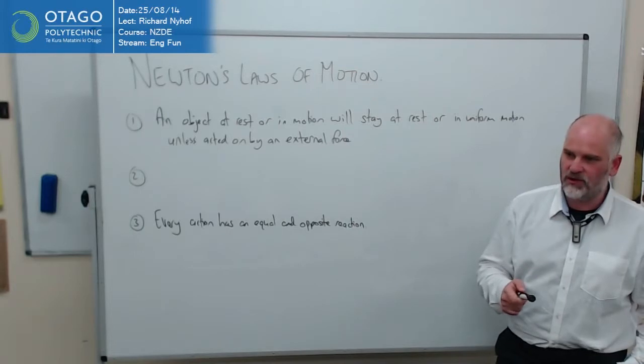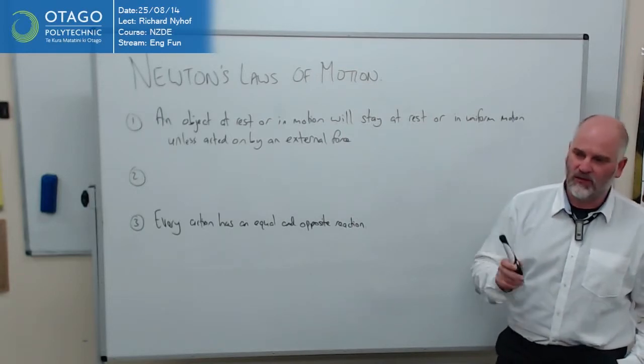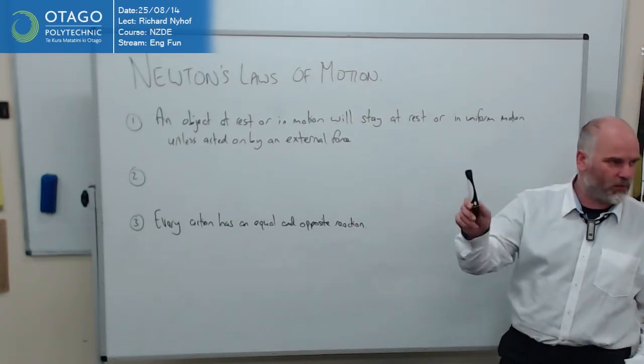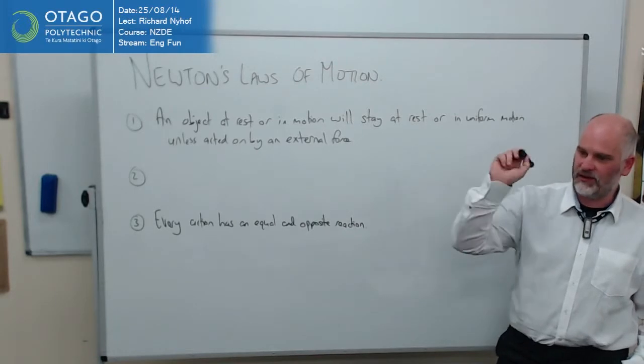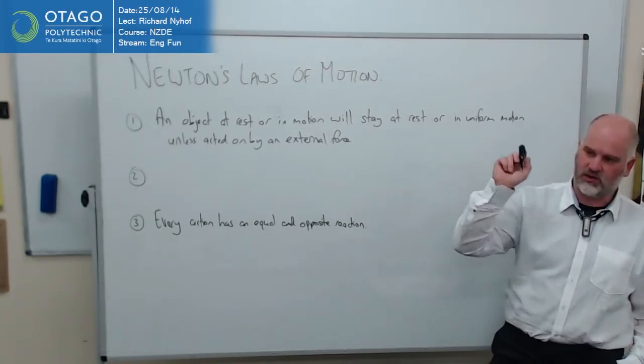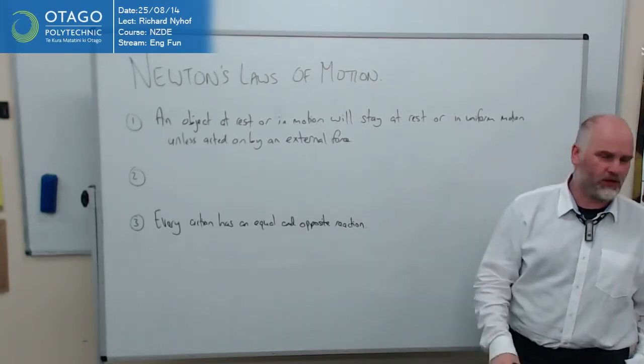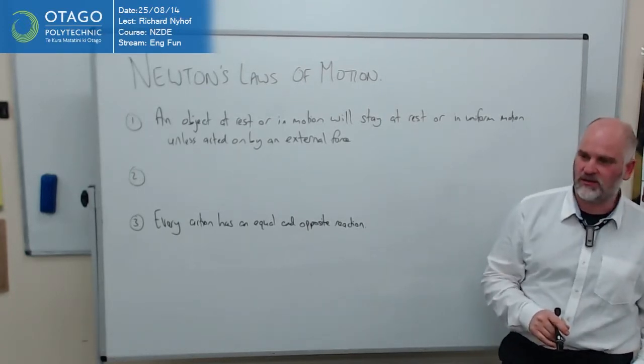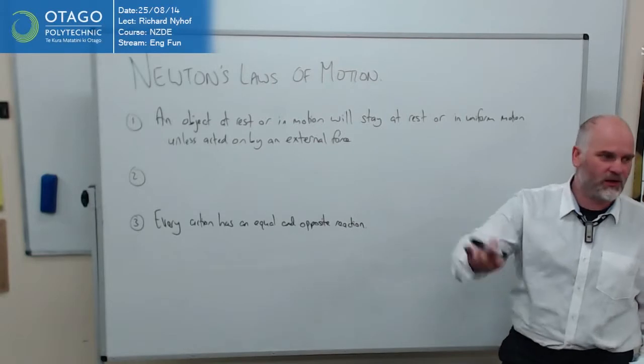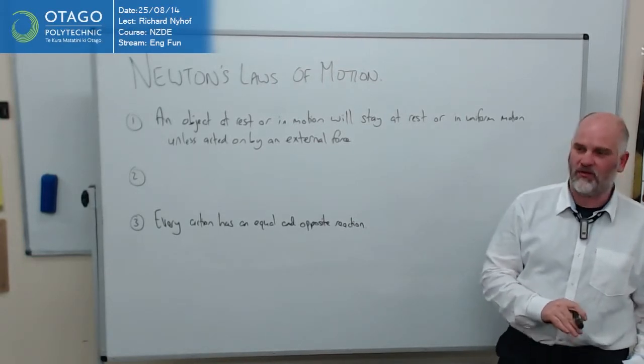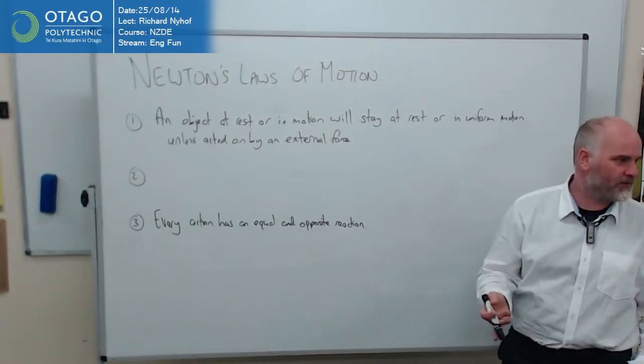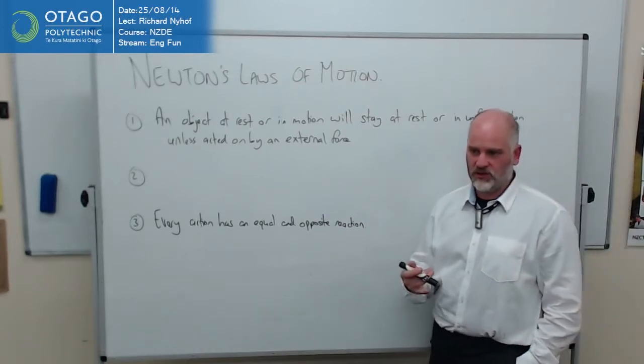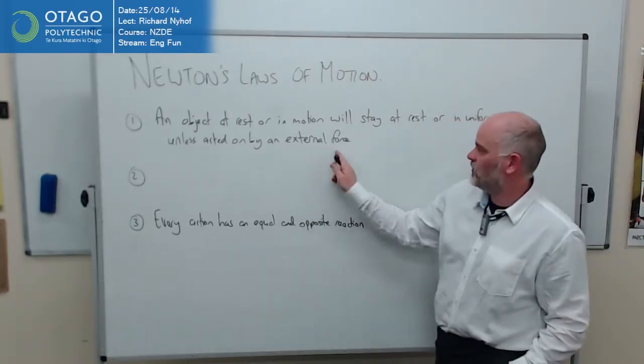But the idea that things that are going in uniform motion keep going in uniform motion isn't what we experience in day to day. So if I throw this whiteboard marker in a straight line, it doesn't keep on going in a straight line. It does a curve. If you look at a car on the road and you take your foot off the gas and put the clutch in and keep on coasting, you don't keep on going forever. You actually slow down.